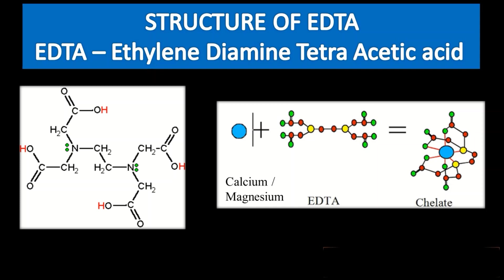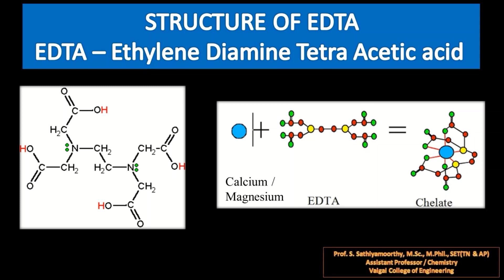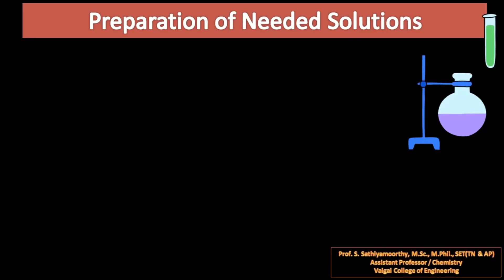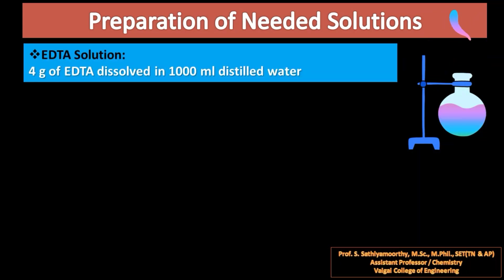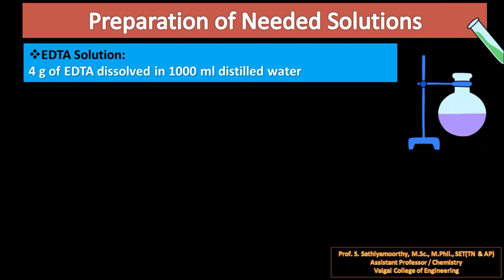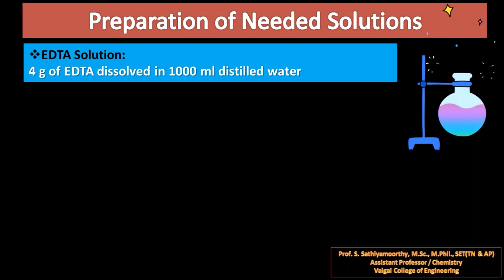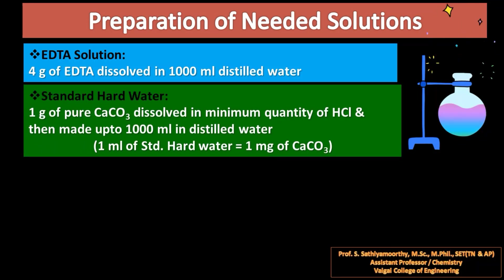These chelate complexes are highly stable, and this stability is utilized in the complexometric titration. We are in need of many solutions for volumetric analysis. First, we need the EDTA solution — for that we are going to take 4 grams of disodium salt of EDTA, not simply EDTA, and make it up to 1000 ml in distilled water.